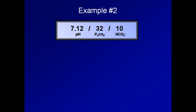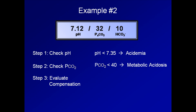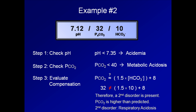Example 2: pH 7.12, pCO2 32, bicarb 10. Step 1: pH is low — acidemia. Step 2: pCO2 is also low, so the process is metabolic — a metabolic acidosis. Step 3: Using Winter's formula, pCO2 should ≈ 1.5 × 10 + 8 = 23. The measured pCO2 of 32 is not close enough to 23, so a second disorder is present. Since pCO2 is higher than predicted, this second process is a respiratory acidosis. The shortcut confirms this: 12 from the pH is not approximately equal to 32 from the pCO2.